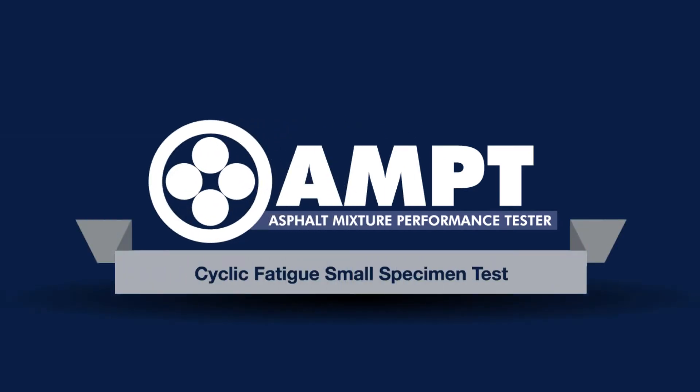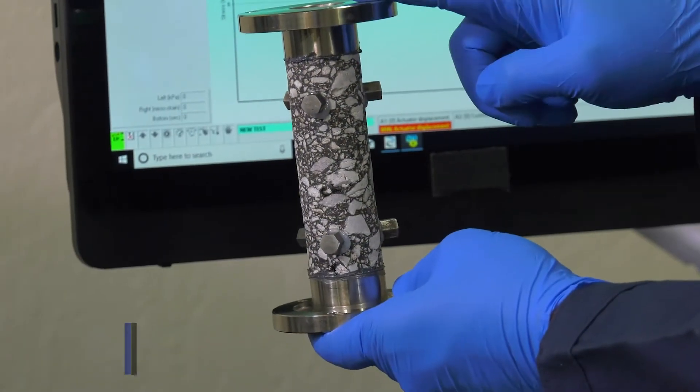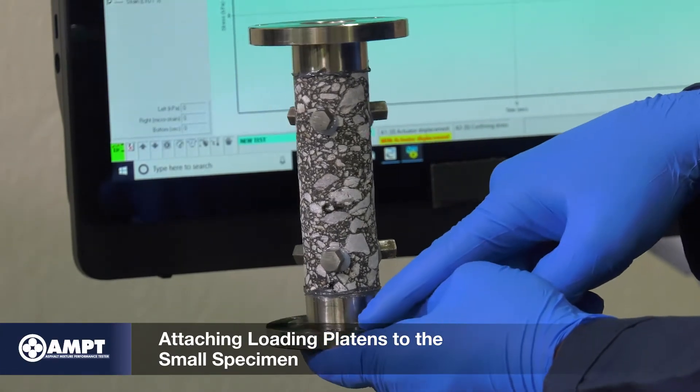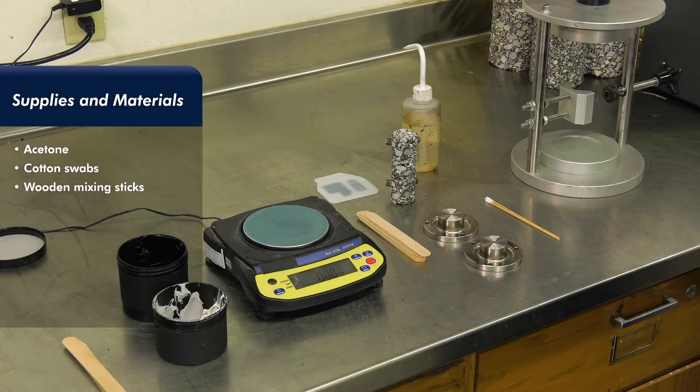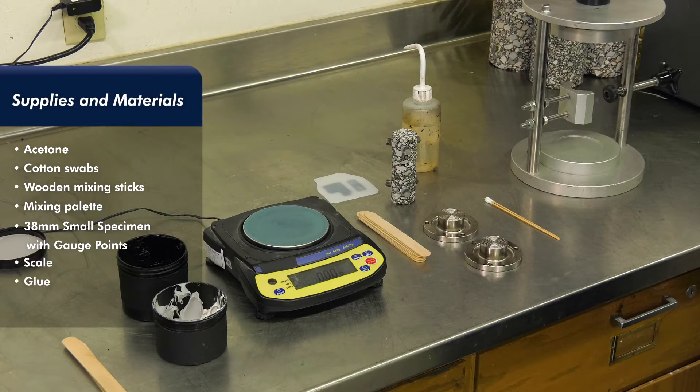Before you begin the cyclic fatigue test, attach platens to your test specimen using a gluing jig. Supplies and materials are shown here and include acetone, cotton swabs, wooden mixing sticks, mixing pallet, 38 millimeter diameter small scale test specimen with gauge points installed, scale, and glue.